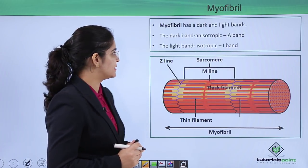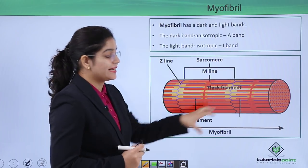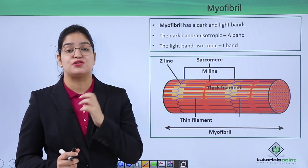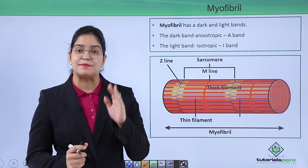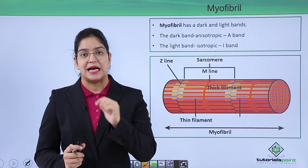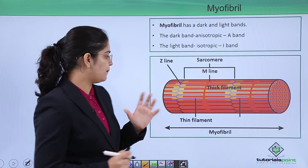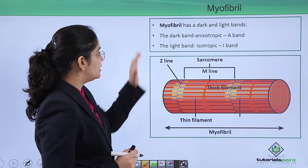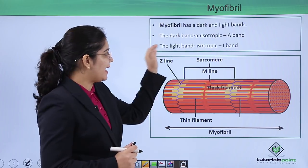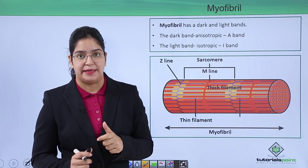Our muscle — mainly the striated one — is made up of two bands: a light band and a dark band. The dark band is called the A band, and the light band is called the I band.